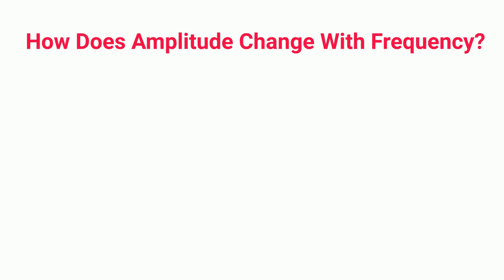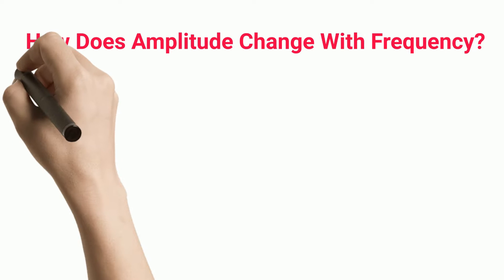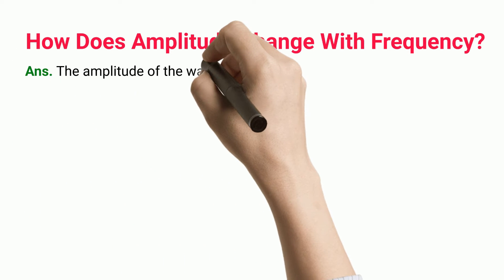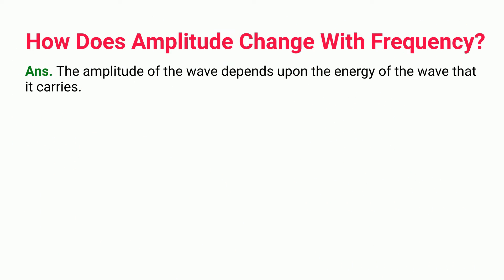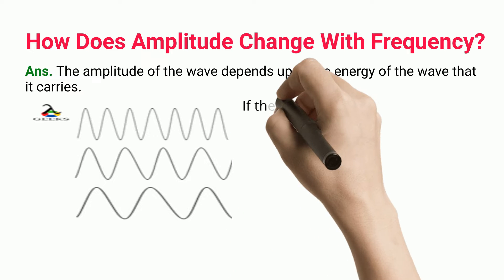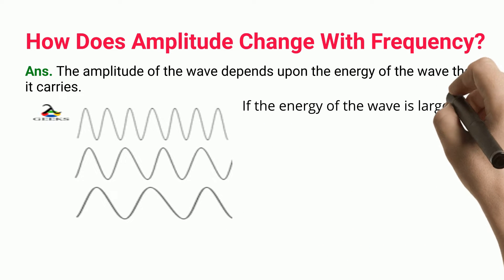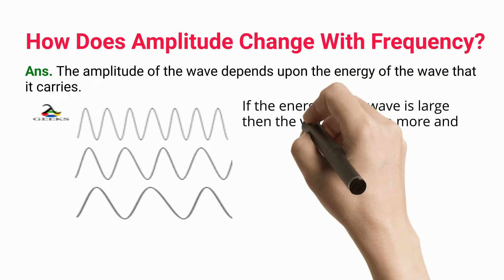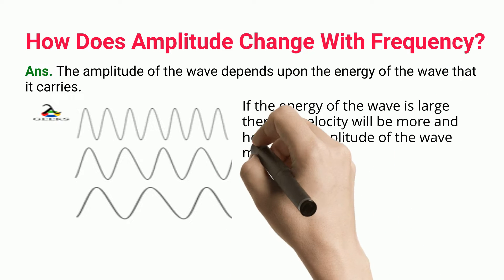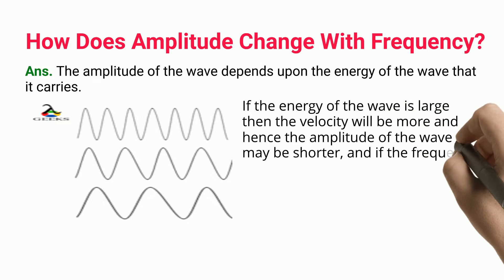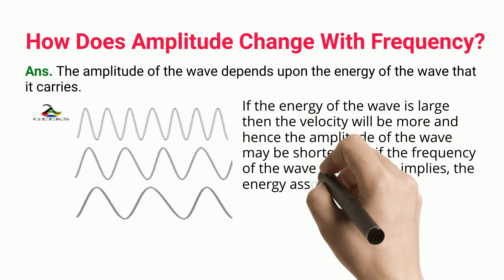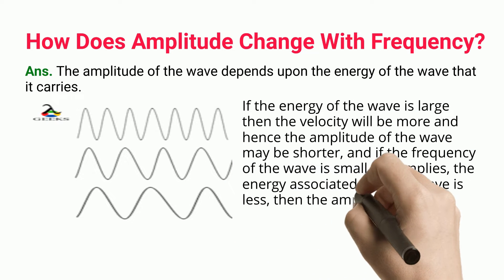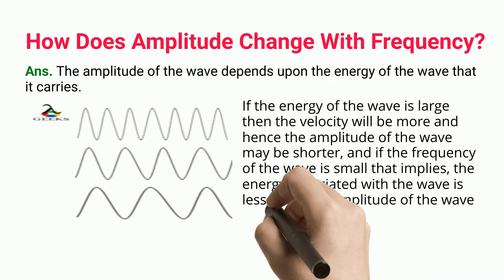How does amplitude change with frequency? The amplitude of the wave depends upon the energy of the wave that it carries. If the energy of the wave is large then the velocity will be more and hence the amplitude of the wave may be shorter, and if the frequency of the wave is small that implies the energy associated with the wave is less, then the amplitude of the wave will be large.